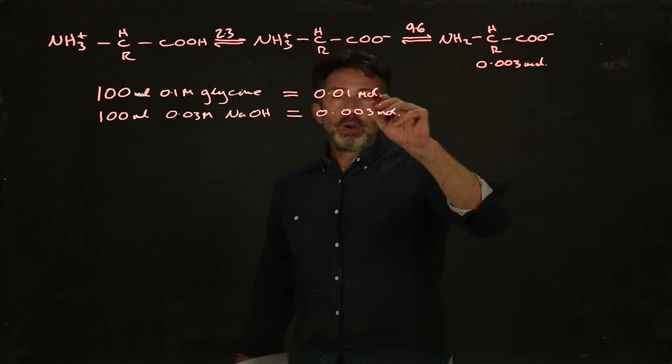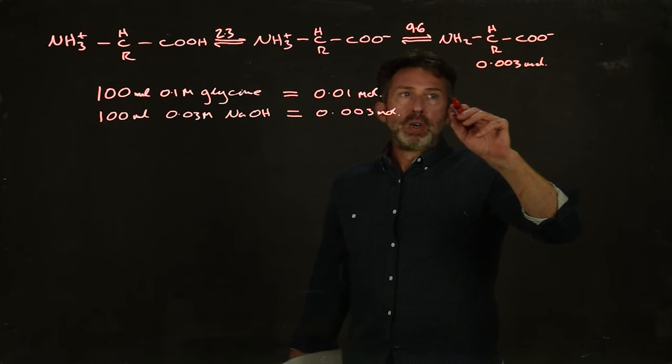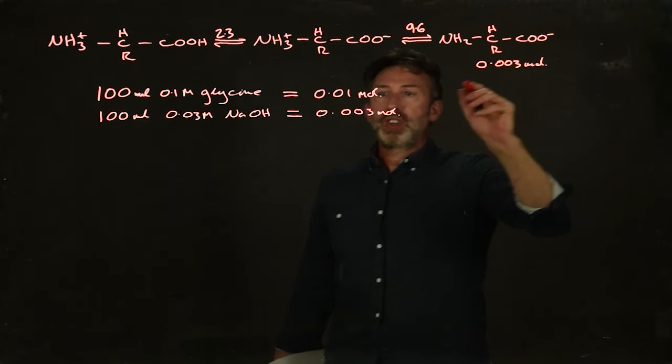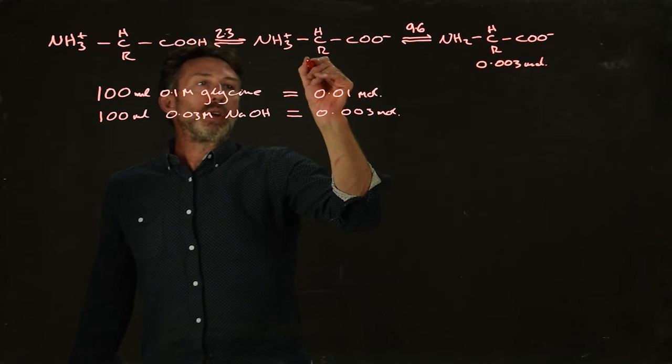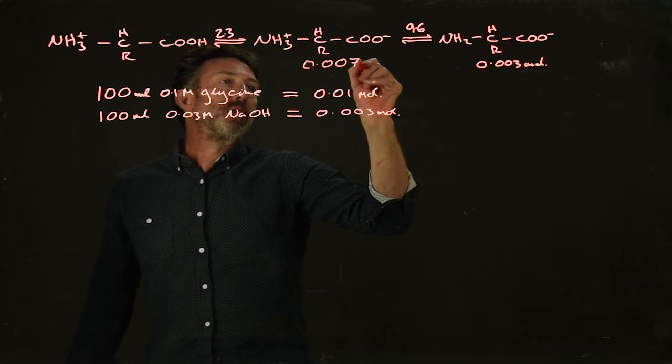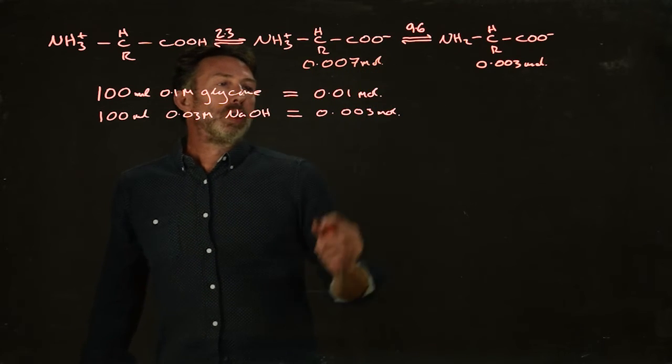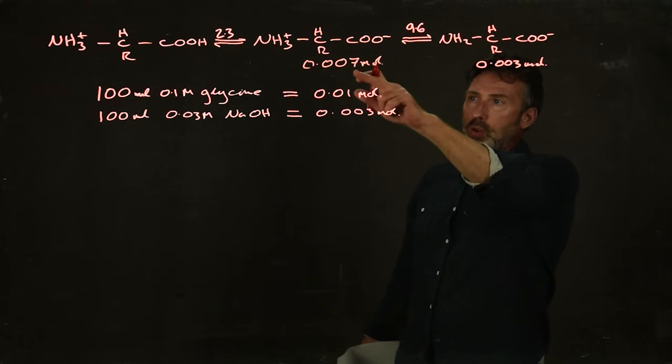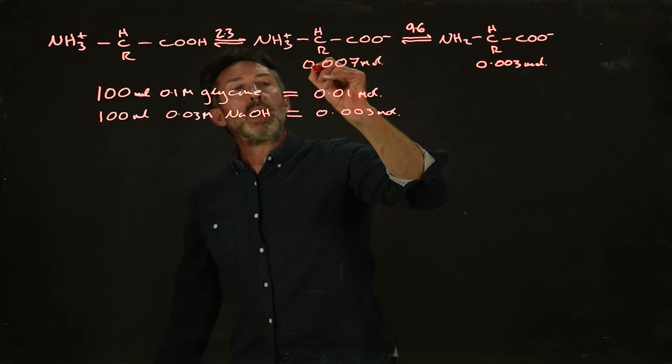If we started with 0.01 moles, but 0.003 moles has been converted across here, we must be left with 0.007 moles. 0.01 minus 0.003 is 0.007 here.